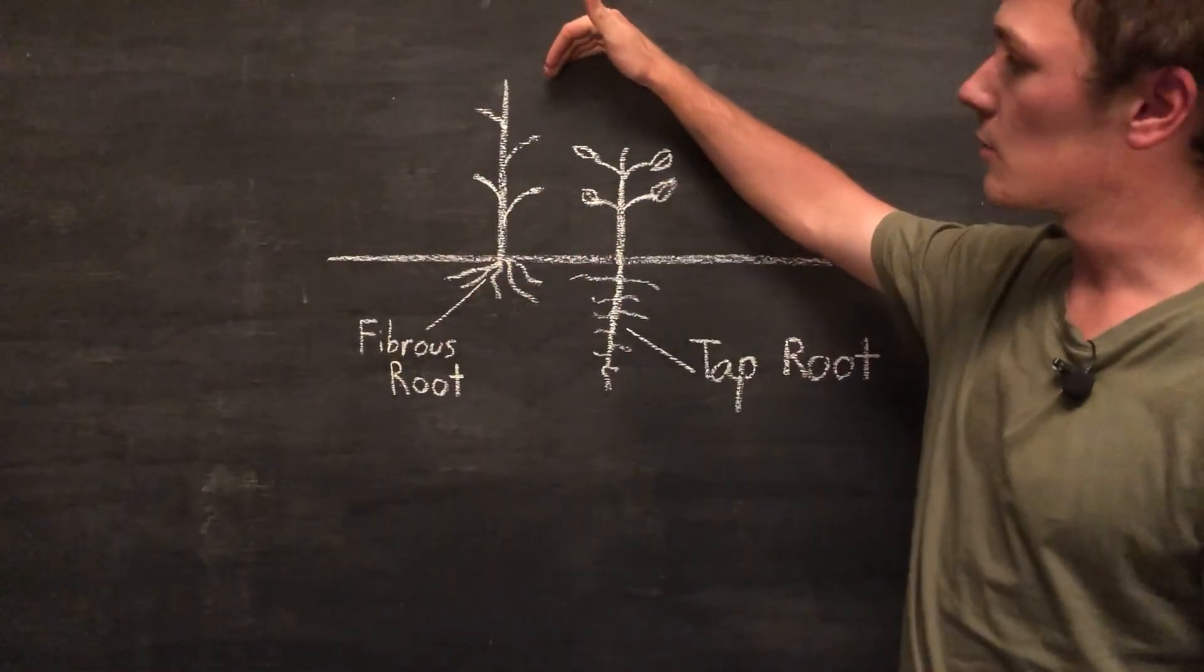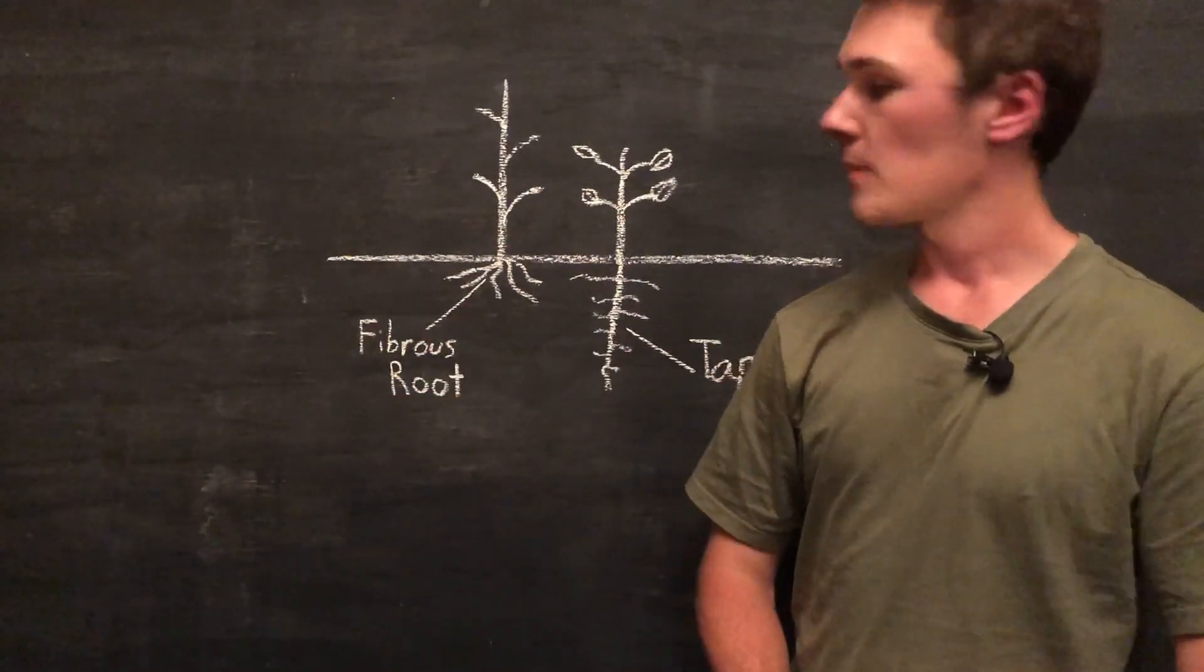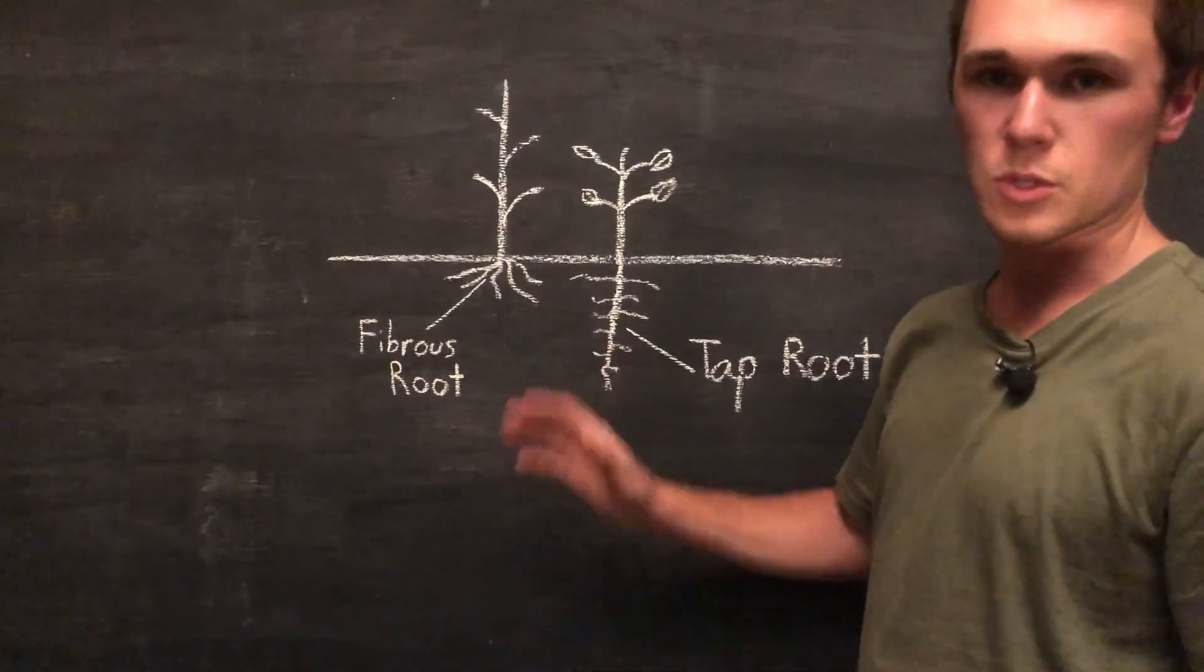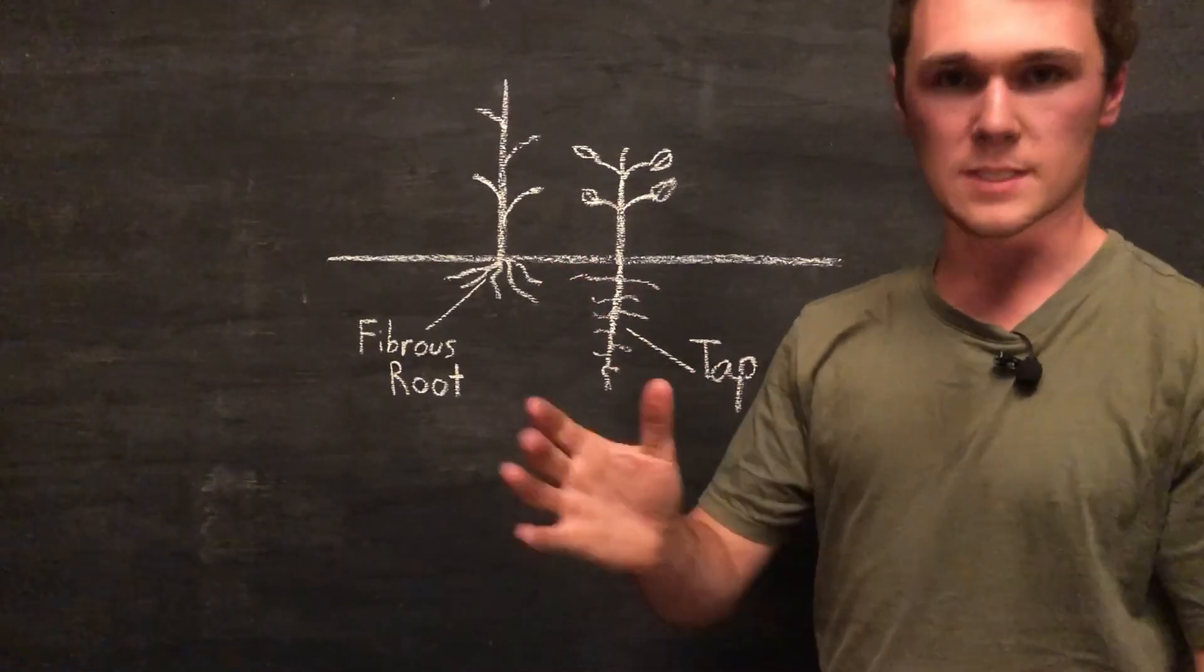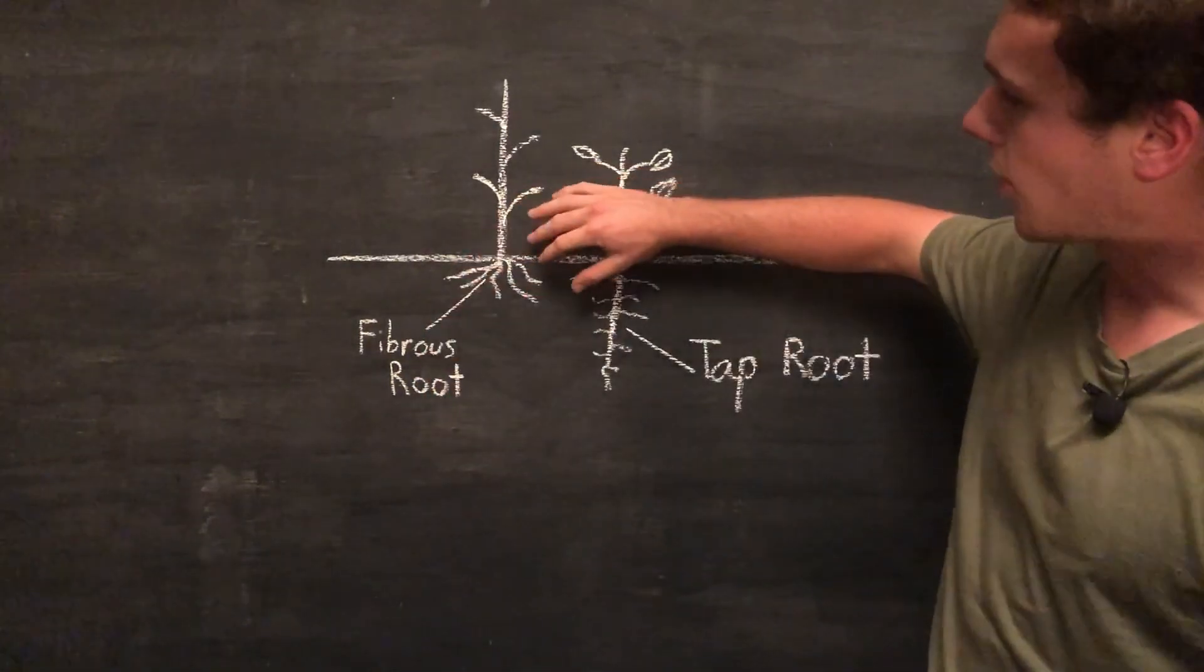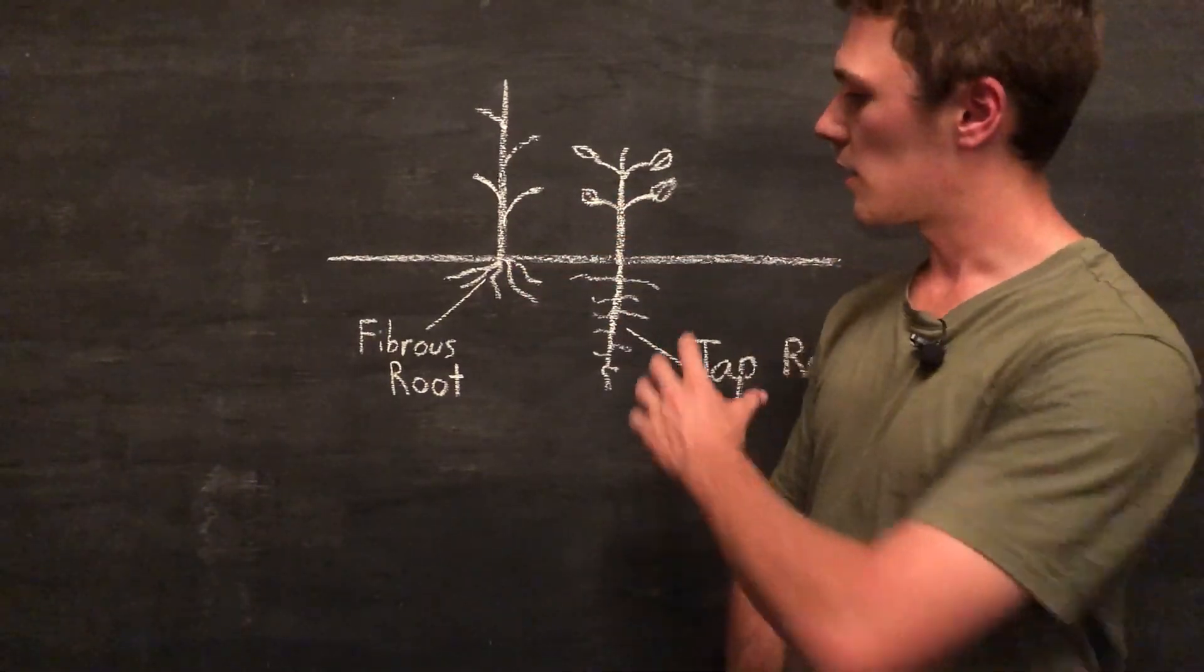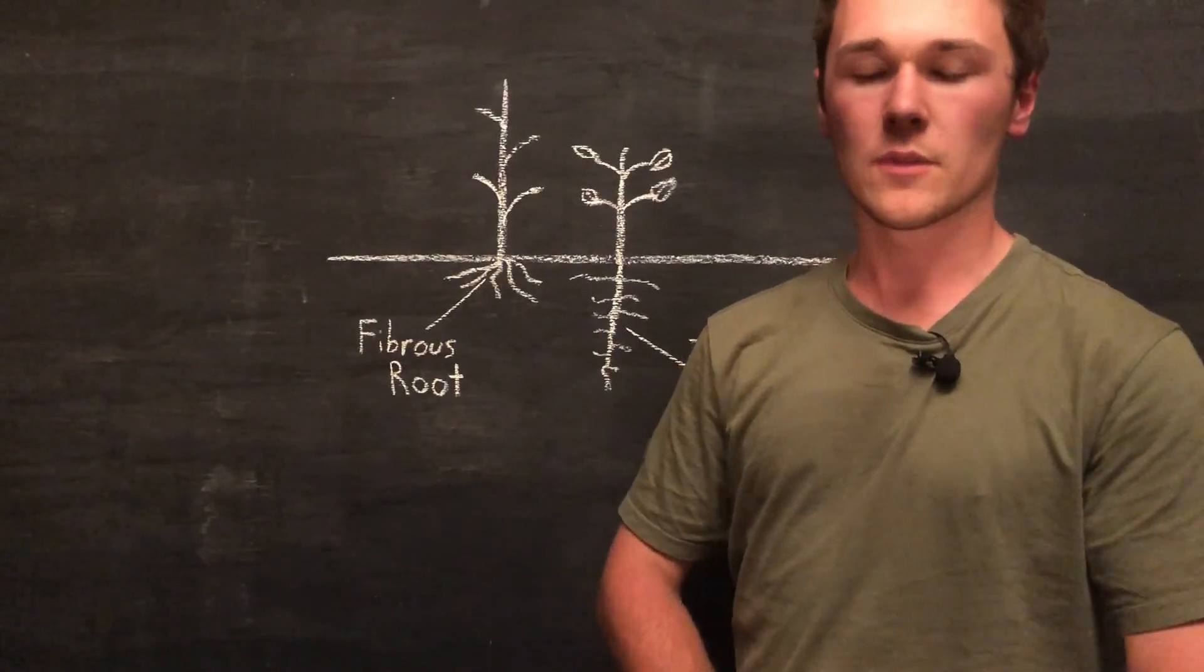Sorghum is a monocot, which means when it germinates it has one leaf. A key feature is that it has fibrous roots, which means there's no single root coming out of the plant. There are a lot of little roots, and generally these roots stay more to the surface of the soil.